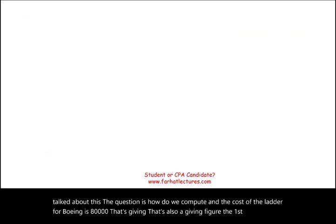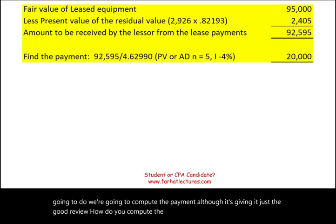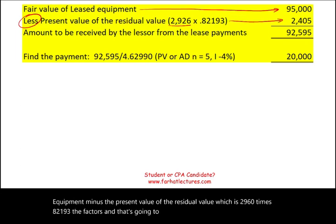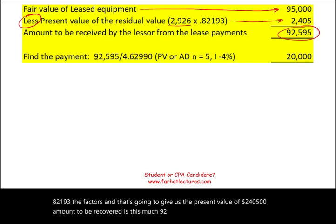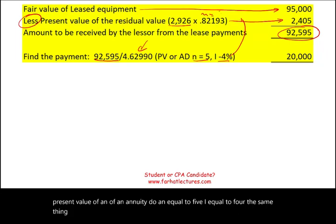First, we compute the payment — though it's given, it's a good review. Take the fair value of the leased asset ($95,000), minus the present value of the residual value: $2,960 × 0.8193 = $2,405. The amount to be recovered is $92,595. Divide by the present value of an annuity due factor at n=5, i=4%, giving a payment of $20,000.